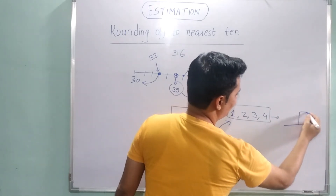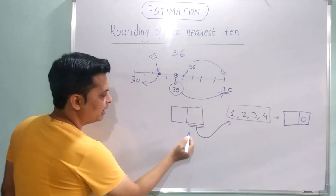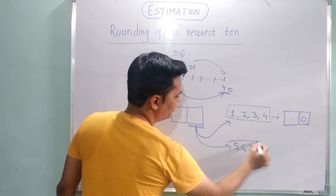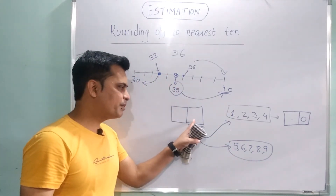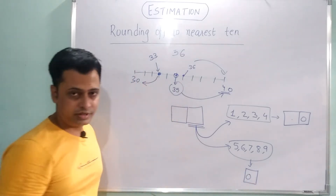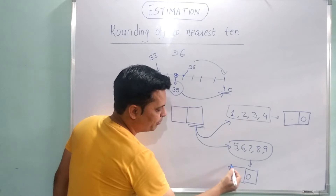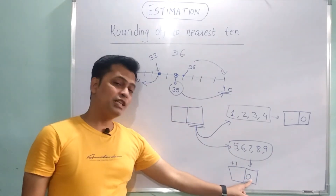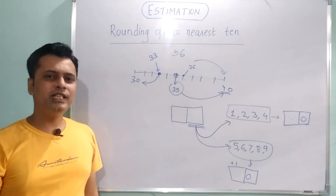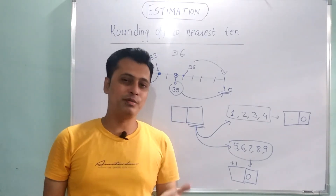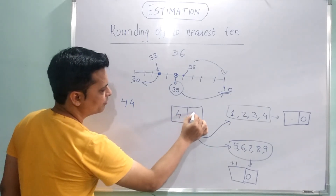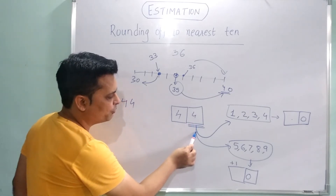अगर ones place पे जो digit है वो 1, 2, 3, या 4 है, तो tens place वैसा ही रहेगा और ones place पे 0 लिखोगे। लेकिन अगर ones place पे digit 5, 6, 7, 8, या 9 है, तो ones place पे 0 लिखोगे और tens place वाले digit में plus 1 कर दोगे। माना एक number है 44।